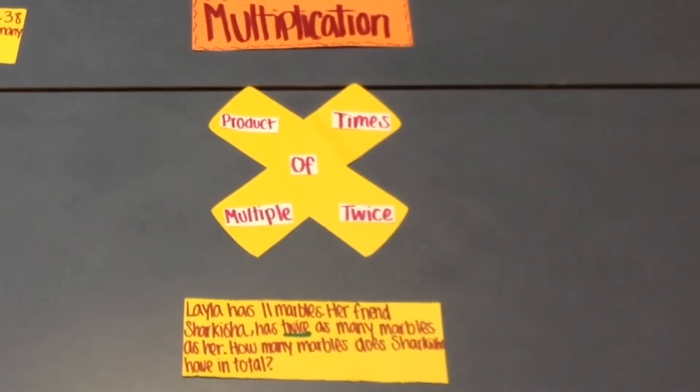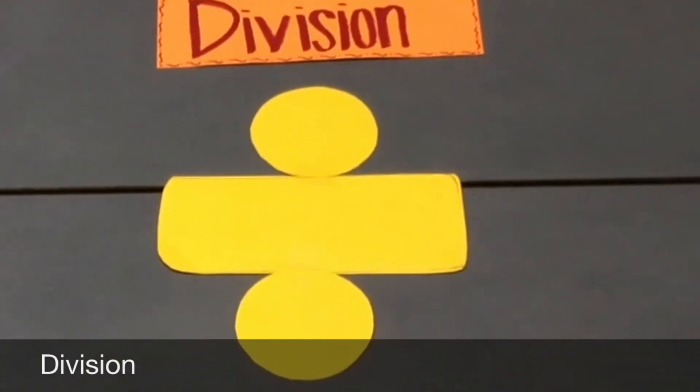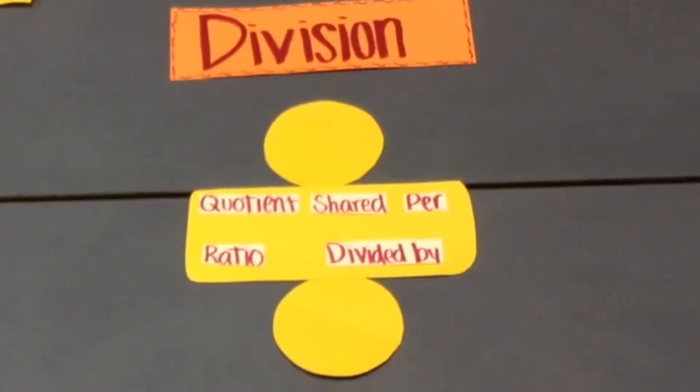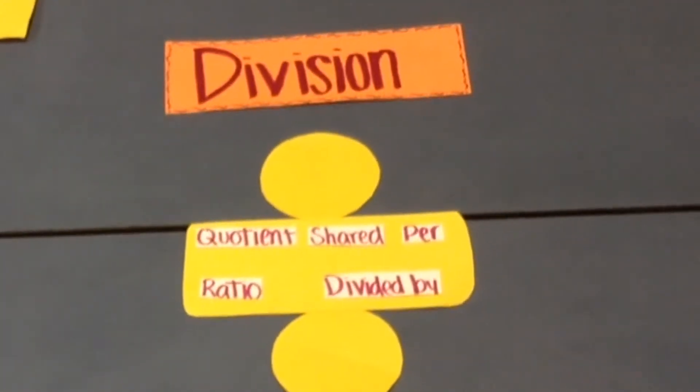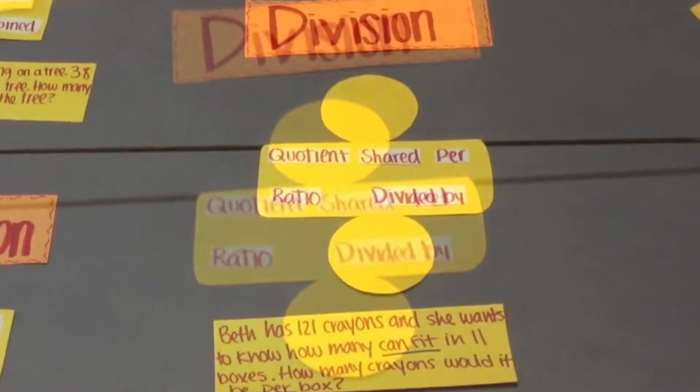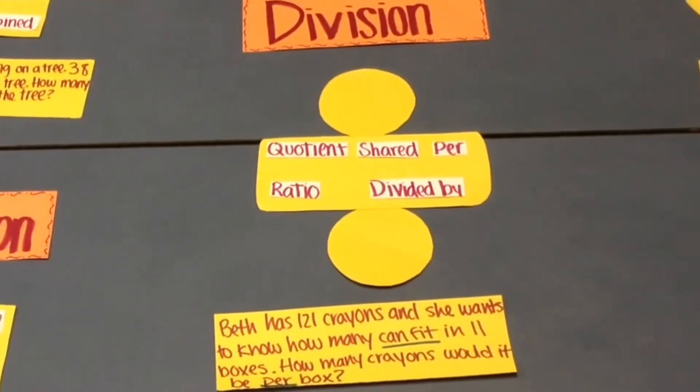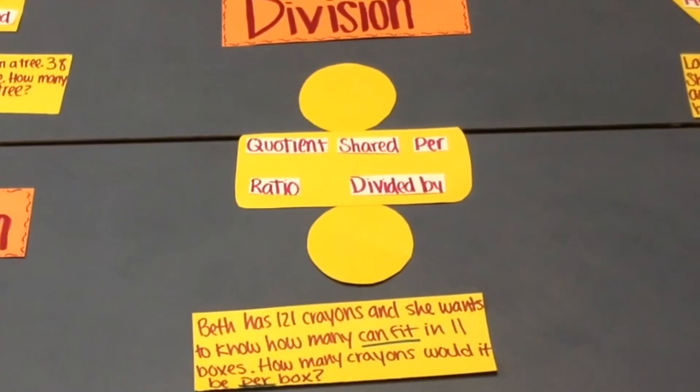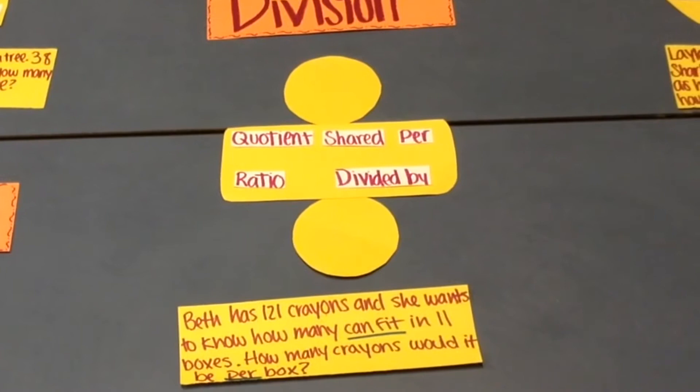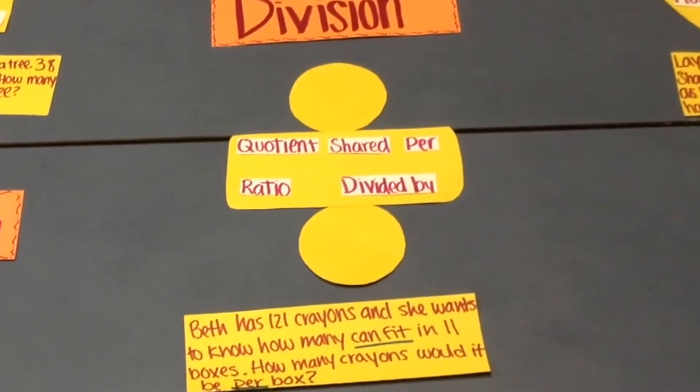Under the middle represents the division sign. The keywords to division are quotient, shared, per, ratio, and divided. Now let's go with the word example for division. Beth has 121 crayons, and she wants to know how many can fit in 11 boxes. How many crayons would it be per box? The keywords here are can fit and per.